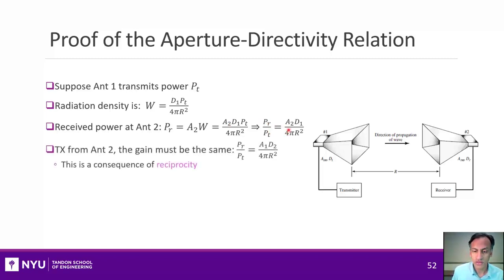The received power at antenna 2 will be its effective aperture times the power flux density, because that's just the definition of the effective aperture. When I plug this equation in, I can get the ratio of the received to transmitted power. But, I could do this in reverse, and by reciprocity, these ratios must be the same. If I compare these two and set them equal, I know that for any two antennas, the ratio of the directivity to its aperture must be constant.